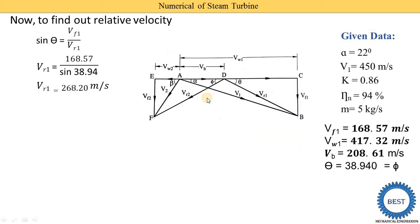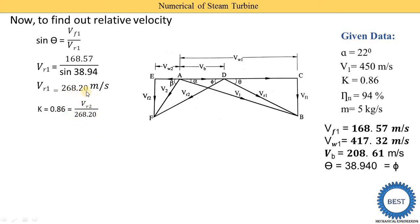Now we find the parameters of the outlet velocity triangle. First we calculate Vr2 using the friction factor K, because no parameter is directly given for the outlet velocity triangle. We need at least one velocity and one angle. We already know phi equals 38.94 degrees. Using K equals Vr2 upon Vr1, with Vr1 equal to 268.20, we get Vr2 equal to 230.65 meter per second.